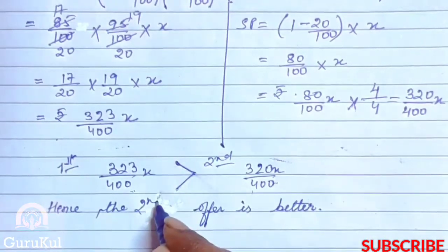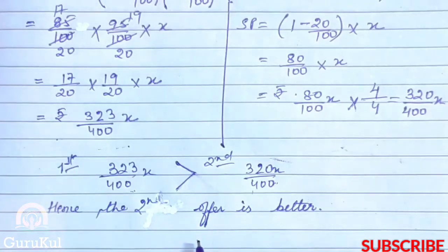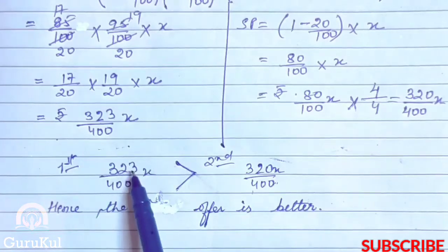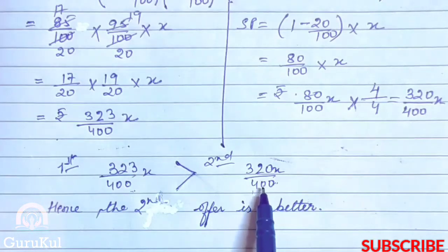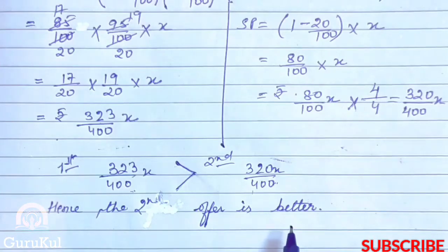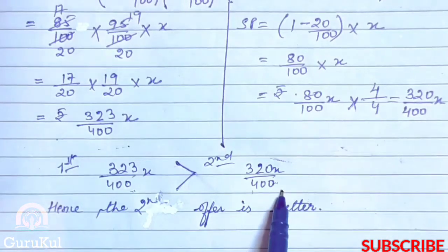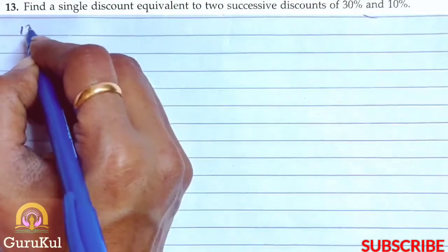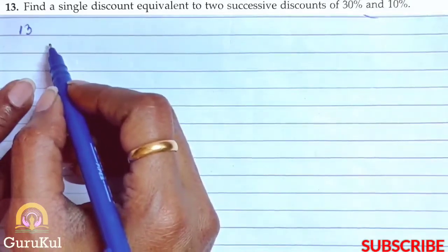The second offer is better. To explain: 323x/400 is larger than 320x/400. If you pay more for an item, that means you got less discount. So since the second dealer's SP (320x/400) is less, the customer pays less — meaning the second offer gives a better deal. With this we have the answer. Now the last sum of exercise 7.3, which is question number 13.